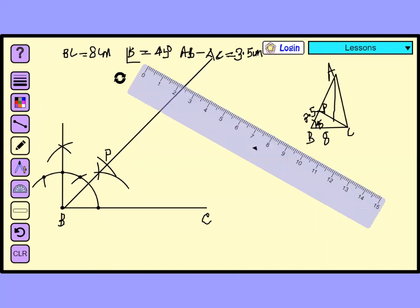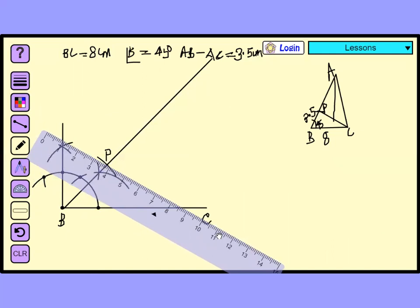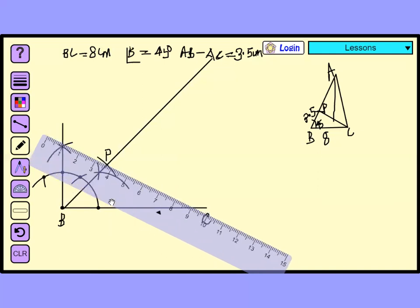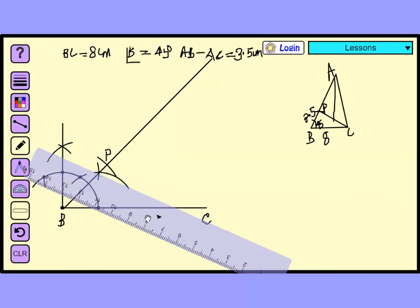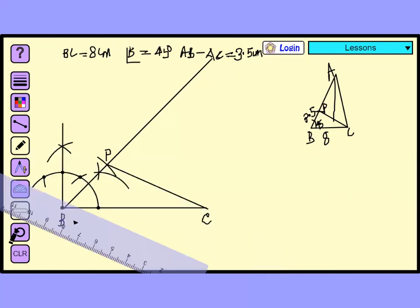Join PC line. With the help of scale, join your PC. Perfect. Join PC. What next? Join perpendicular bisector of PC. How to draw. Again, you take the compass.